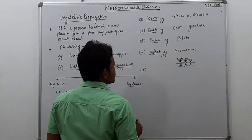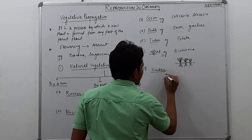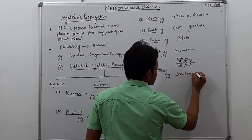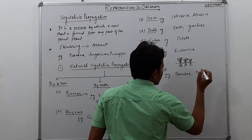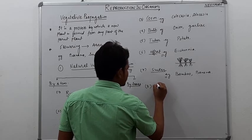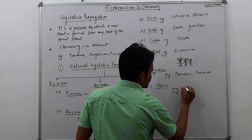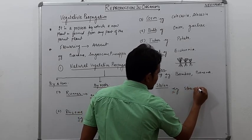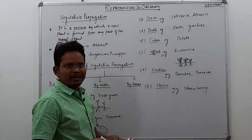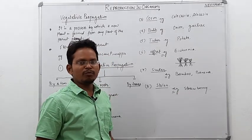The next is sucker. Its example is bamboo and banana. And last is stolon. Its example is strawberry. In this also, the stems form lateral branches, these lateral branches form new plants by forming adventitious roots.